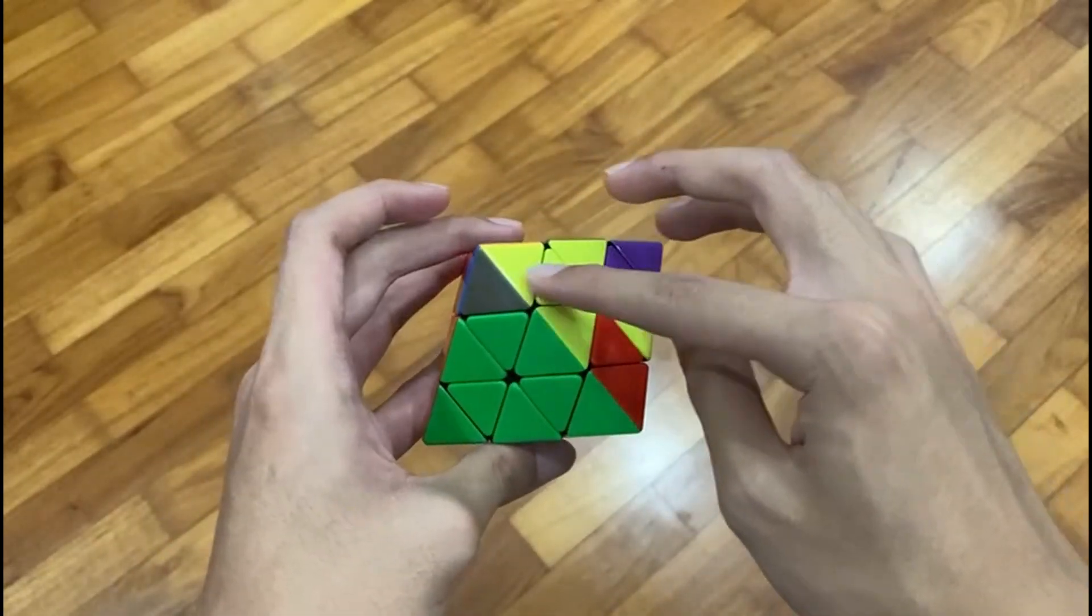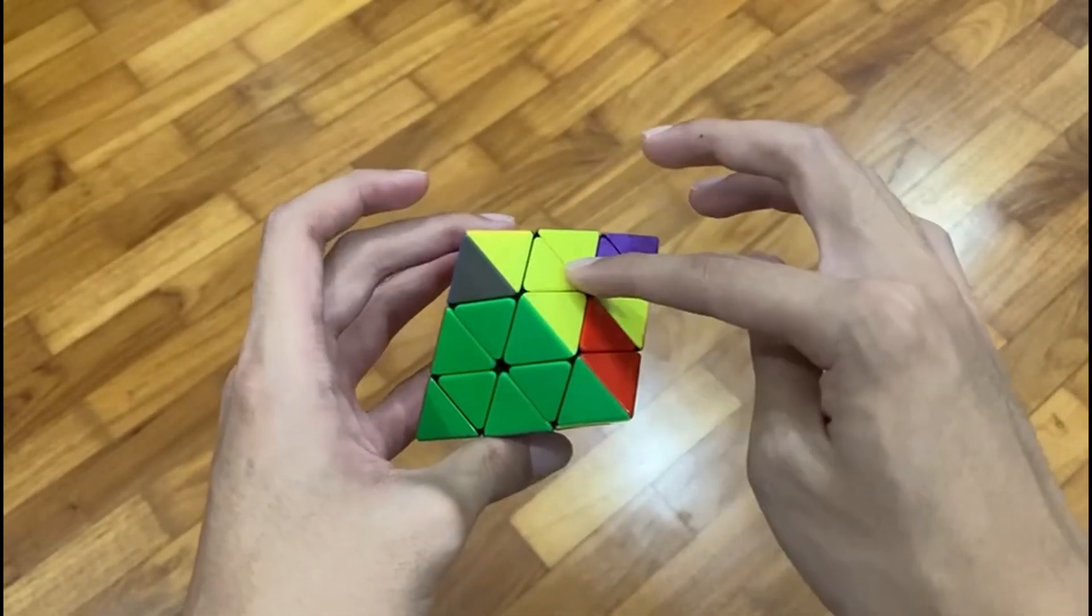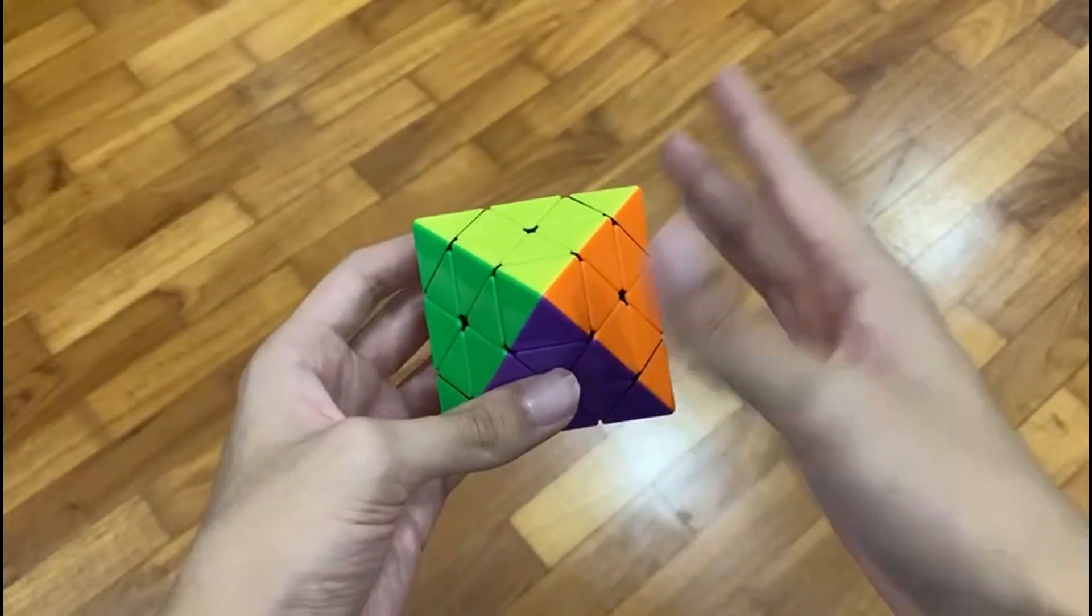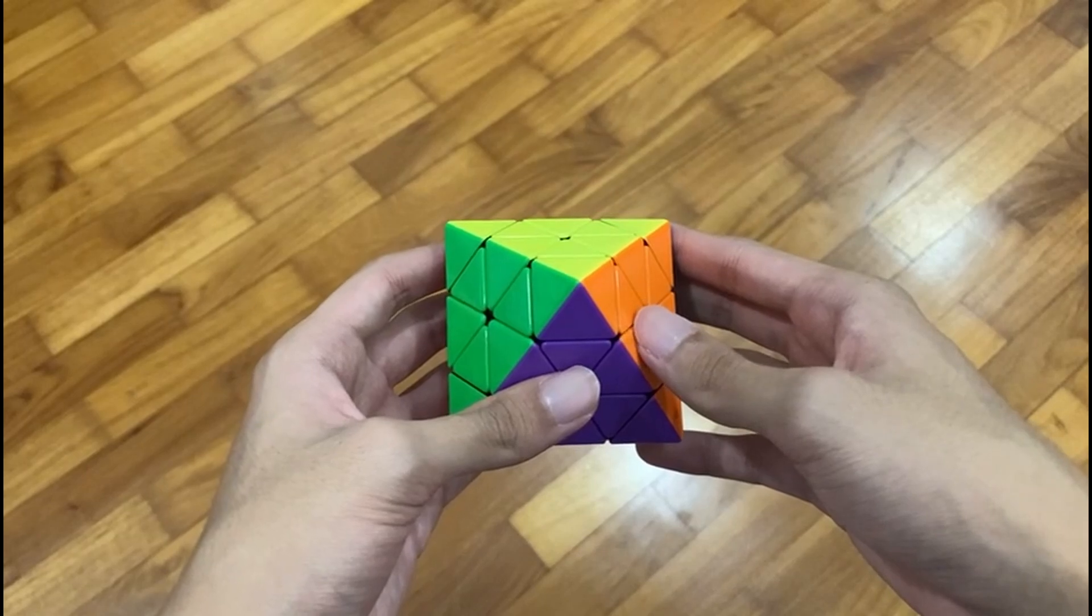And at the same time, if you have a triplet or a pair over here, it would also preserve this. So, this is very useful for us in pairing up our triplets or pseudo-triplets.